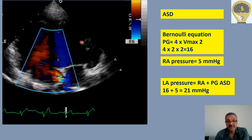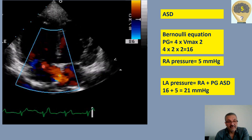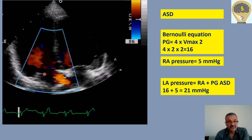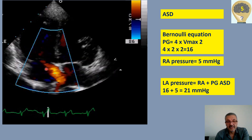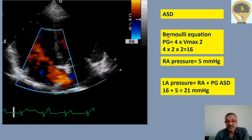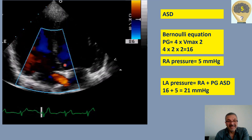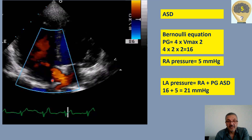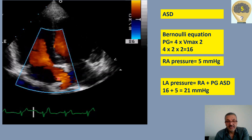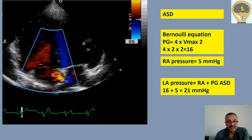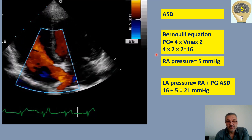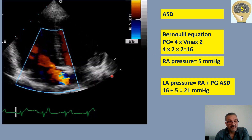In this apical four-chamber view, the right ventricle is dilated compared to the left atrium. We have a jet across the interatrial septum with a positive shift, meaning blood goes from the left atrium to the right atrium — a typical pattern of ASD. Using the Bernoulli equation, pressure equals 4 times V max squared. With V max of 2 meters per second, that gives us 4 times 2 squared, equal to 16 mmHg.